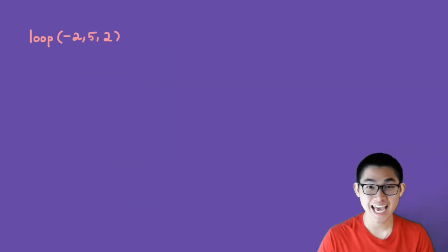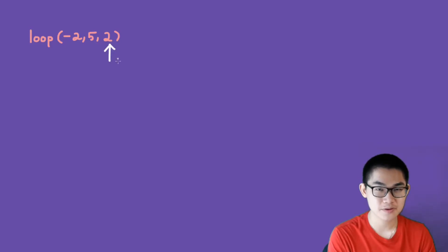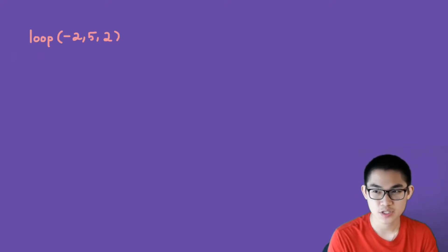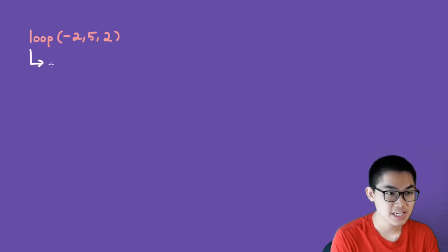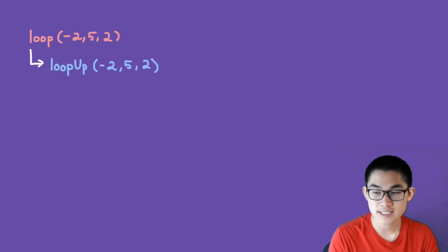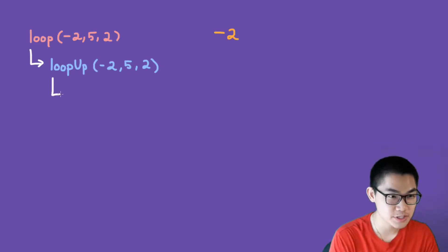The first step to writing any recursion is to draw the recursion tree, and let me show you how to do that. So here we have loop, we have negative 2, 5, and number 2, and there are two case scenarios here. The first case is when the step is a positive number, and the second case is when it is a negative number. In this case it is a positive number, so we must go with the positive case scenario. This function is going to call another function — let's call it loop up — and we have negative 2, 5, and 2. What this is going to do is print out negative 2.